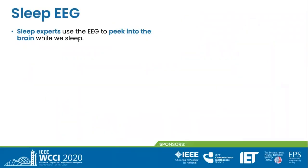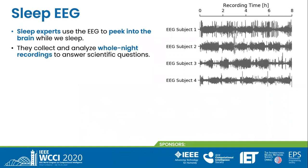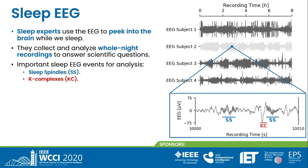Sleep experts rely on biological signals to study our bodies when we sleep. An important tool is the EEG, which they use to peek into the brain and its electrical activity. Generally, they collect whole-night recordings. Here you can see an example with four different subjects during eight hours of sleep. Experts analyze them to answer questions like the mechanisms of learning, memory, and neurological disorders. In this 10-second segment from the second subject, we recognize two important types of sleep EEG events.